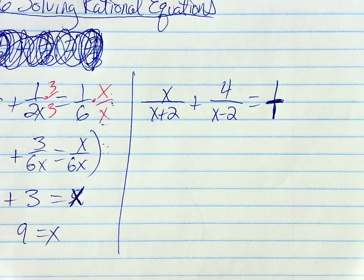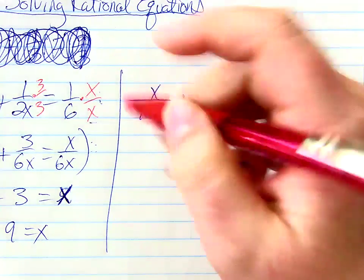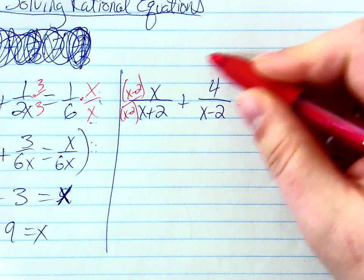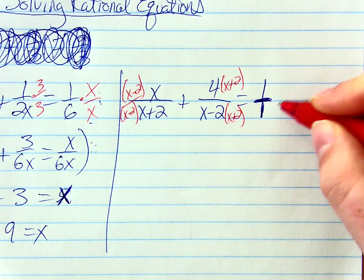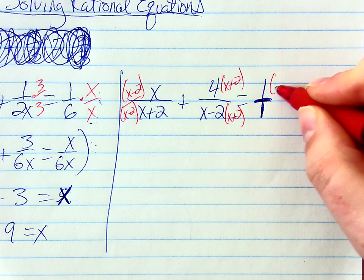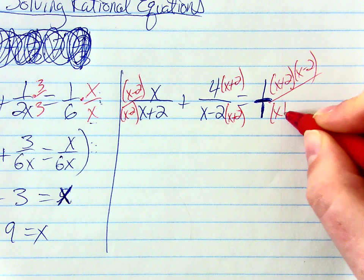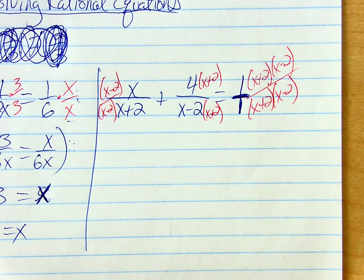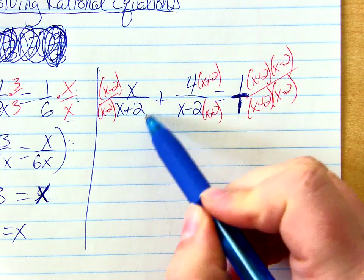So over here, what do I need to multiply this first one by? x minus 2. So I'll multiply that by x minus 2 over x minus 2. This middle one needs x plus 2 over x plus 2. And then what's this one need? x minus 2 and x plus 2. It needs them both. x plus 2 times x minus 2 on top and on bottom. Now everybody has a common denominator, right?